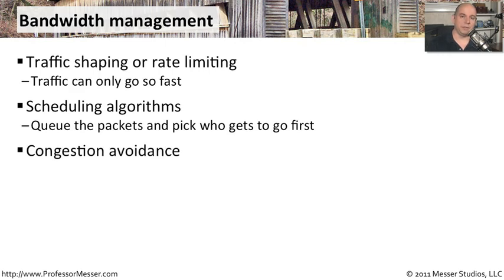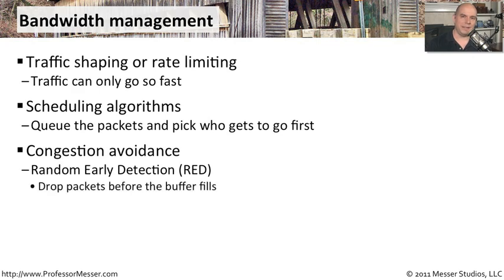Another method of controlling traffic prioritization that's a bit less intelligent than traffic shaping or queuing is something called congestion avoidance. One common way of doing this is Random Early Detection. Whenever you're sending a lot of traffic through the network, you're filling up buffers. What Random Early Detection does is, as the buffer fills to a certain point, it randomly starts dropping packets that are still stuck in that queue. The device on the other side recognizes that a packet didn't get through and requests a resend, and hopefully when that packet is resent, whatever was causing the congestion has cleared from the network.